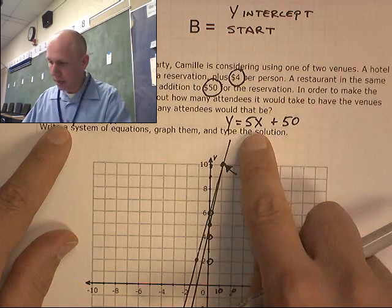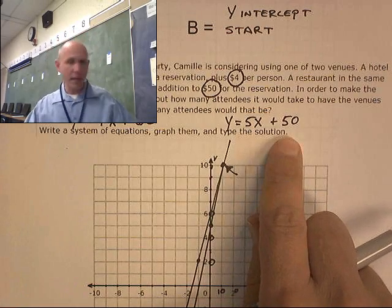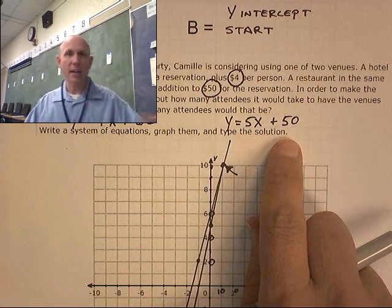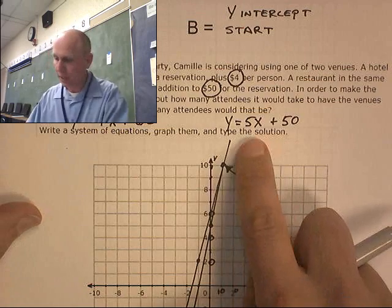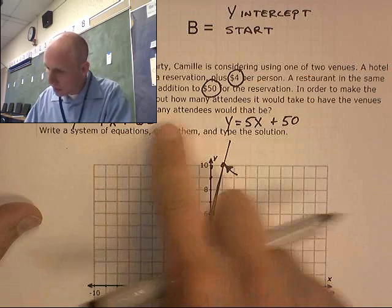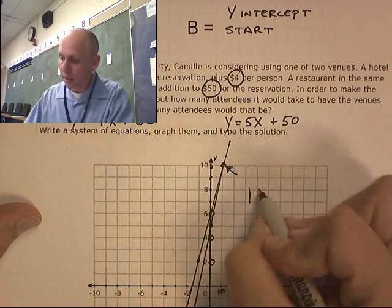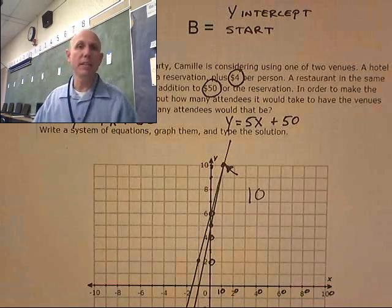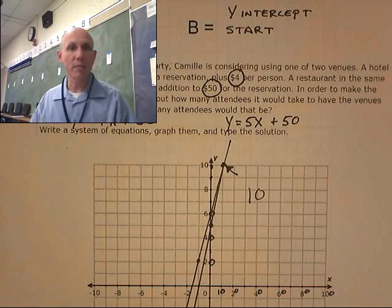And there's the phone. And 5 times 10 equals 100. I'm not answering the phone. Not in the middle of this video. And 5x plus 50. So, that does work. So, my solution is how many people would attend? 10 people attend, and that's where it comes together and works.